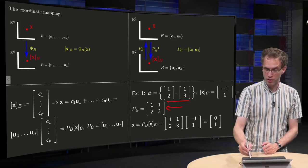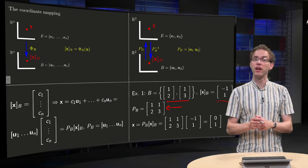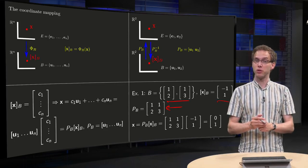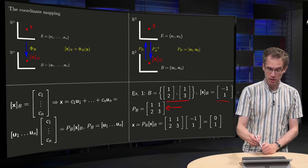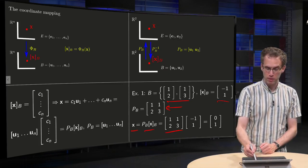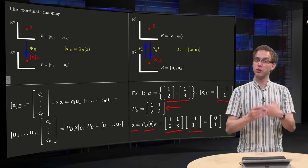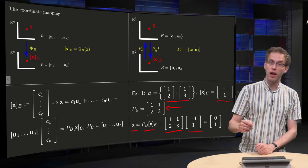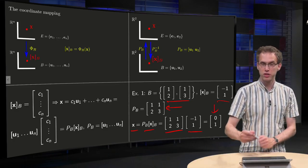And suppose now furthermore we have some xB equals [-1,1]. How do we find our x? Well, that's also easy if you have your PB, because your x is just PB times xB. You have your PB, you have your xB, so you only have to compute this matrix-vector product and it gives you [0,1].